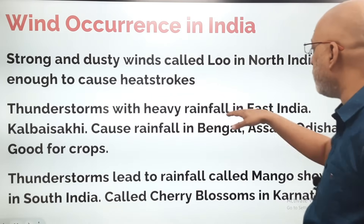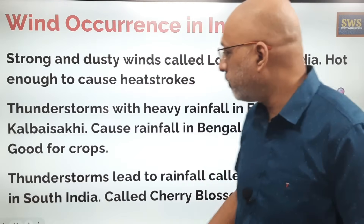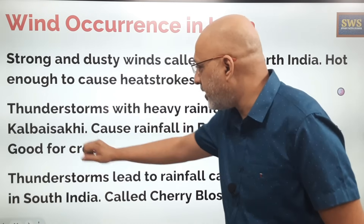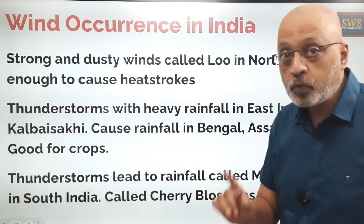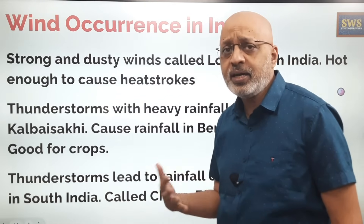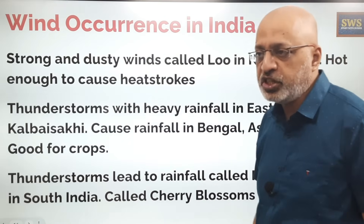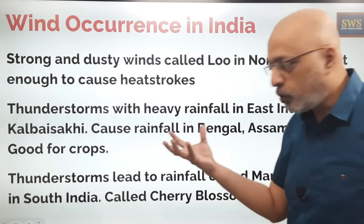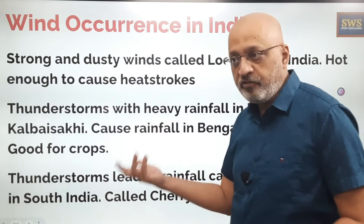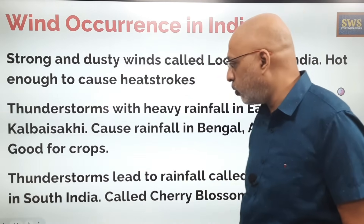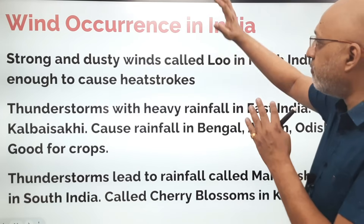In east India, there are thunderstorms with heavy rainfall during summer. This is called Kalbaisakhi, which causes rainfall in Bengal, Assam, and Odisha and is good for crops. It occurs essentially during the month of April — in Assam it's also known as Bardoli Chirha. These thunderstorms originate over the Chota Nagpur Plateau near Jharkhand and Odisha, carried eastward by westerly winds.